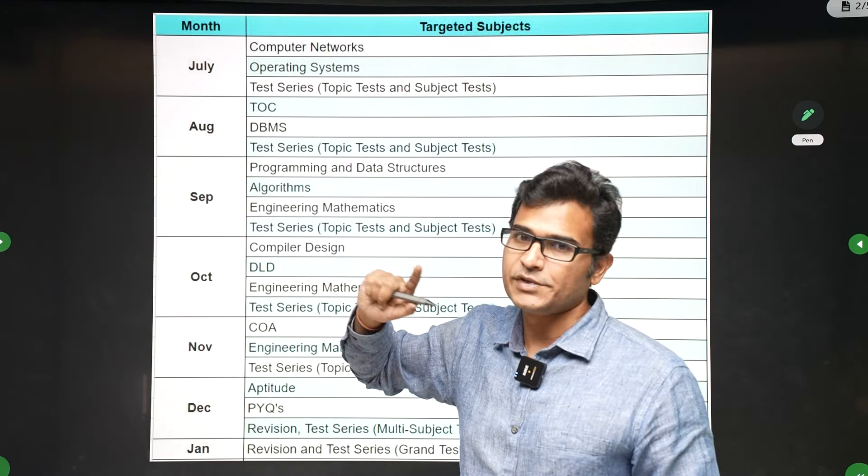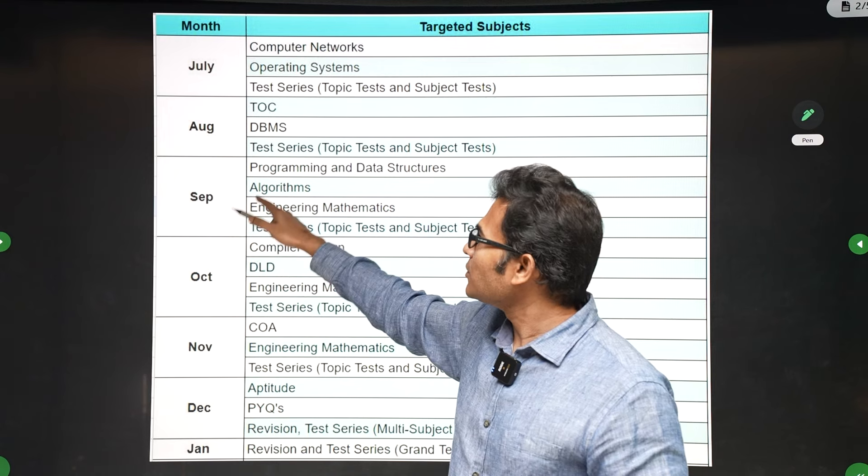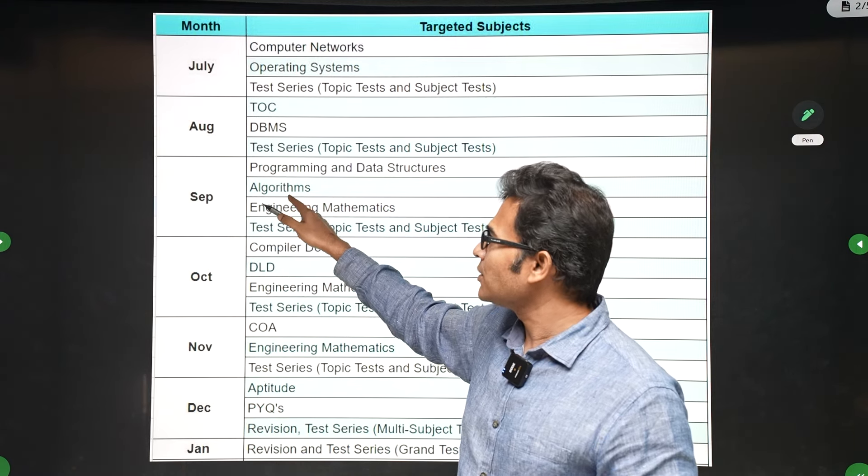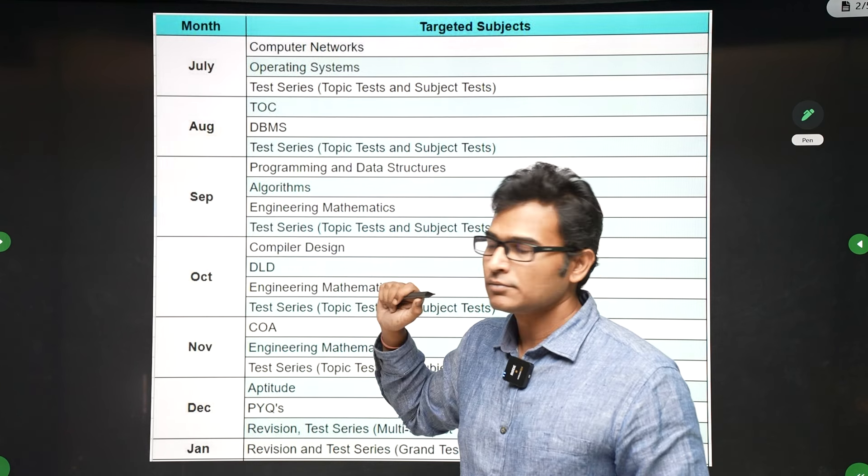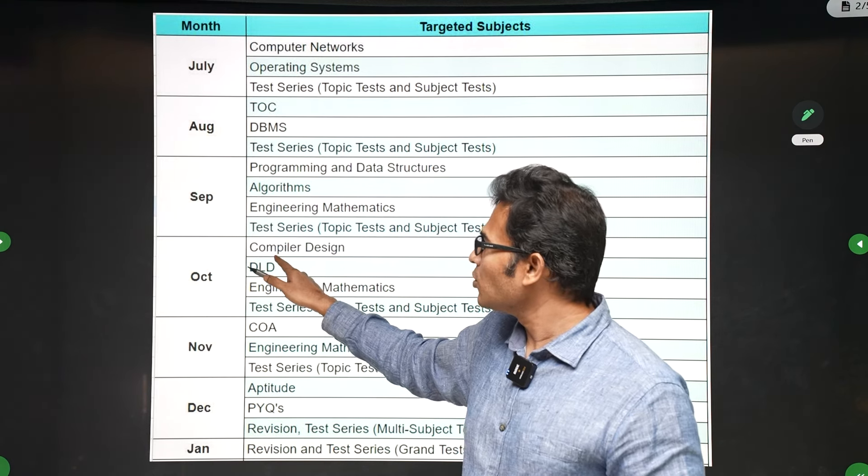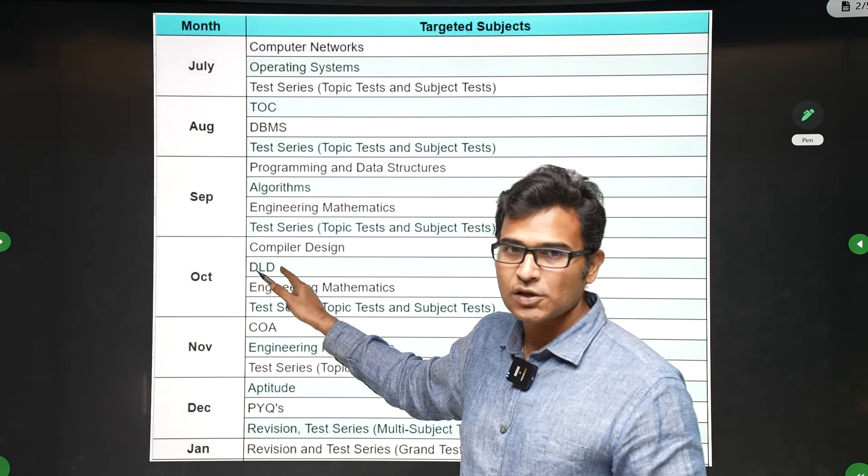Then in September, you finish Programming, Algorithms, and a part of Engineering Mathematics, and you do the test series for that. Then for October, you do Compiler Design and DLD (Digital Logic Design), do some part of Engineering Mathematics, and also the test series for that.